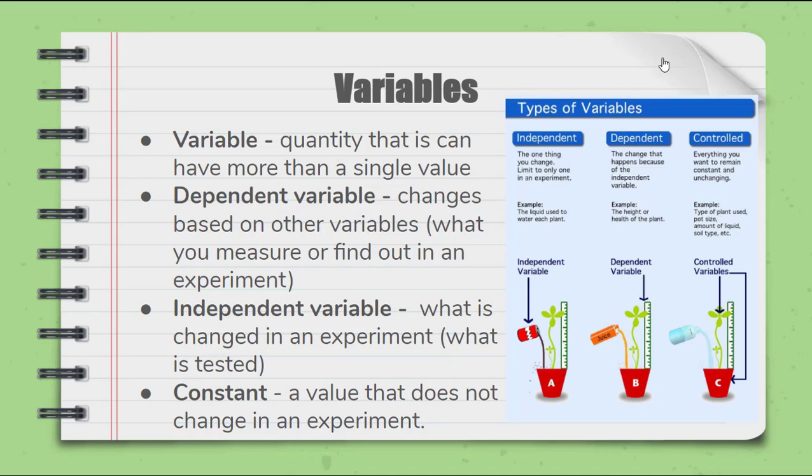And typically we limit that to one thing per experiment. The rationale for that is if you make multiple changes to an experiment and you get a change, then you don't know which of those variables actually caused the change, whether it was one or the other or both. We also want to control as many things as possible in the experiment. So if we look, we're using the same pot to grow the plant and we're using the same type of plant as well. The more controlled variables we have, the more we know if the independent variable actually caused the change in the dependent variable.